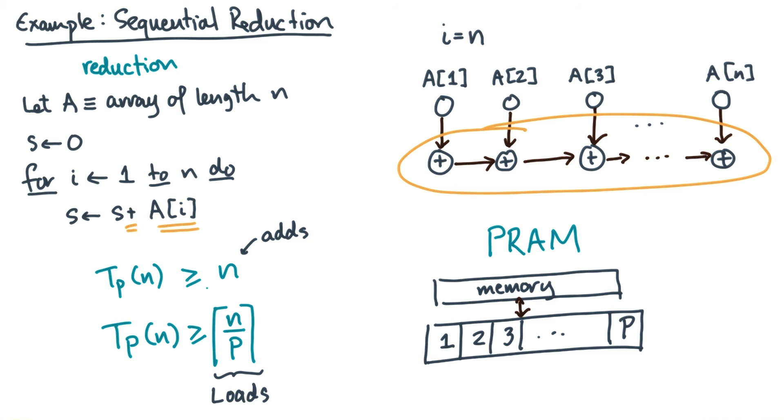So we can simplify the time. So what we just showed is exactly what we expected, which is that a sequential reduction will take N units of time on a PRAM.